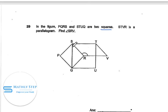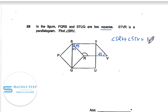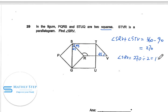Because this is a square and a diagonal goes across it, this angle is 45 degrees. The other square also gives 45 degrees. From the parallelogram, angle SRV plus angle STV, these two angles are equal and add up to 360 degrees minus 45 minus 45 minus 90, which is 180 degrees. So each one, angle SRV equals half of 270, equal to 135 degrees. This is for question 29.